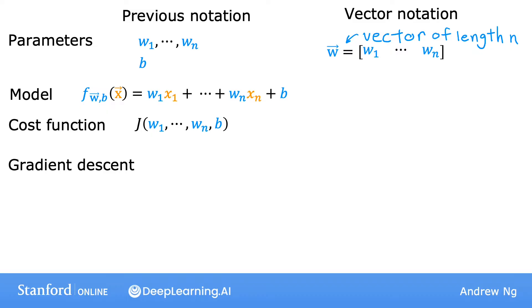So we're just going to think of the parameters of this model as a vector w as well as b where b is still a number, same as before.